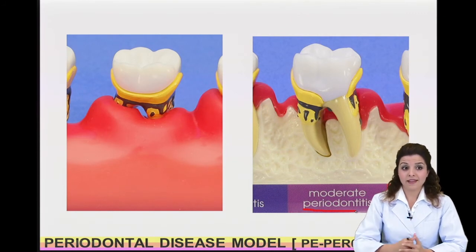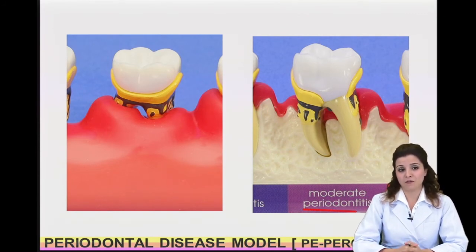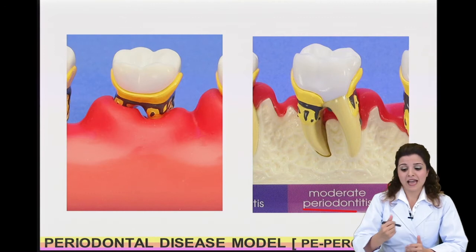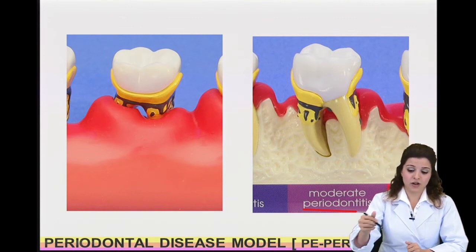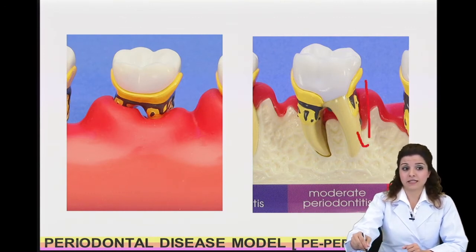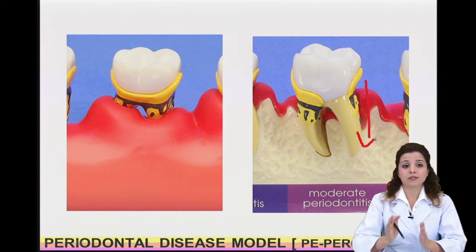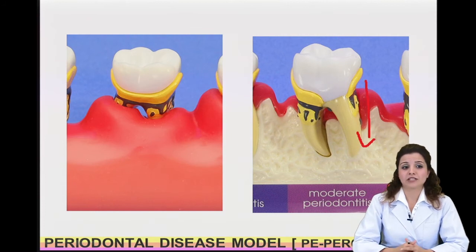In this stage, the bacteria have already infected the alveolar bone and continue to destroy the bone structure, and your patient can see how the bone and gingival resorption continues gradually.